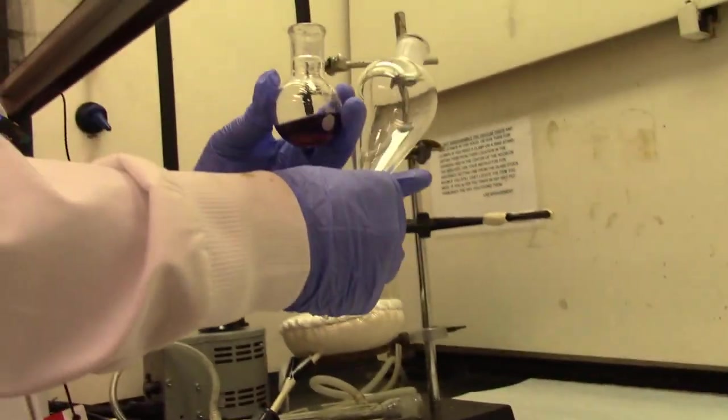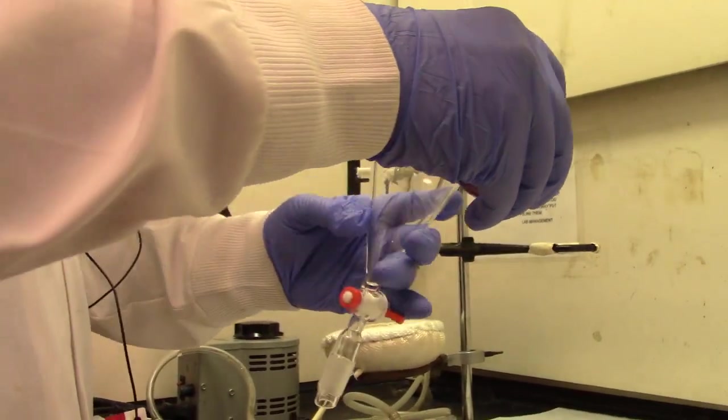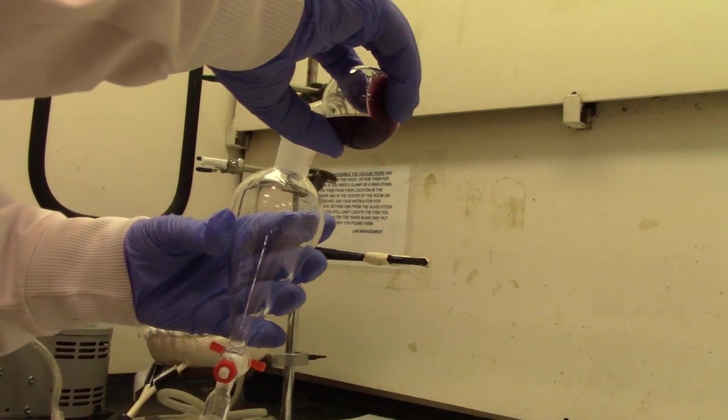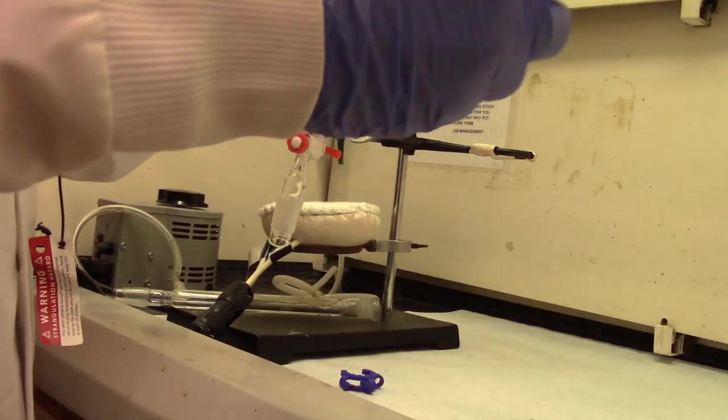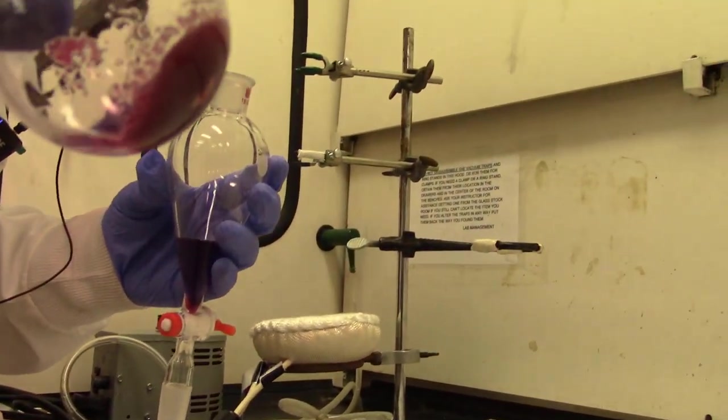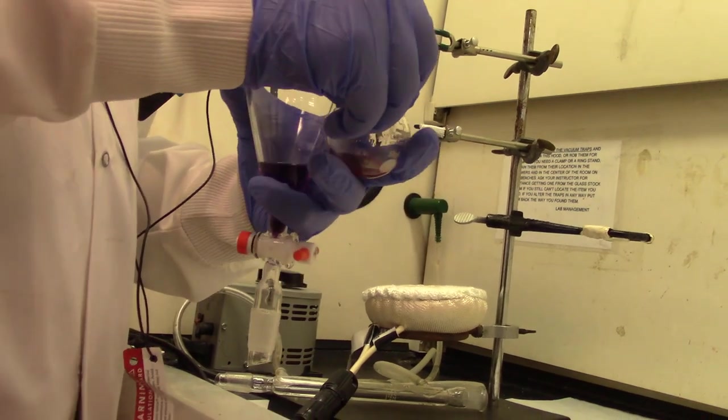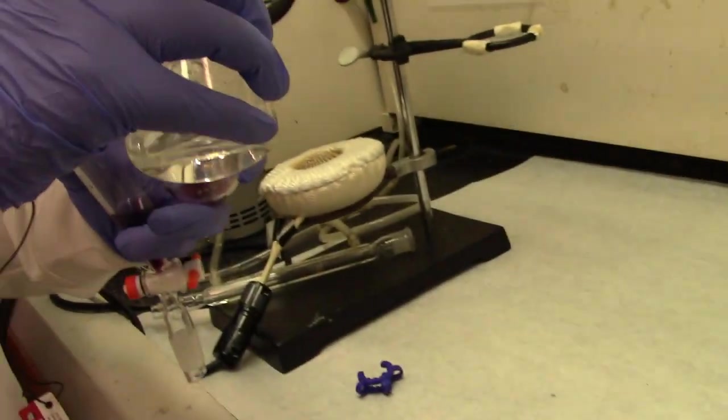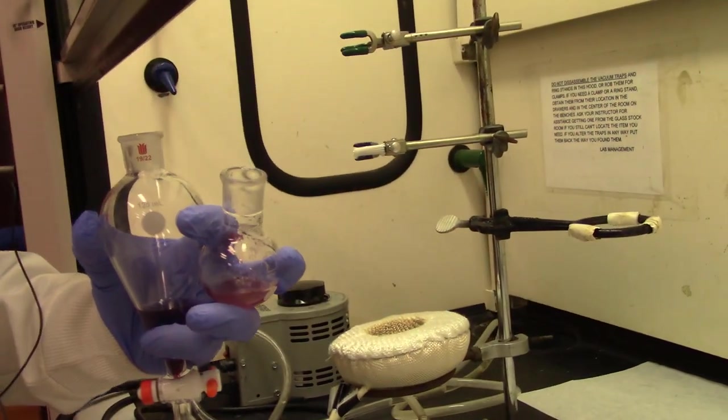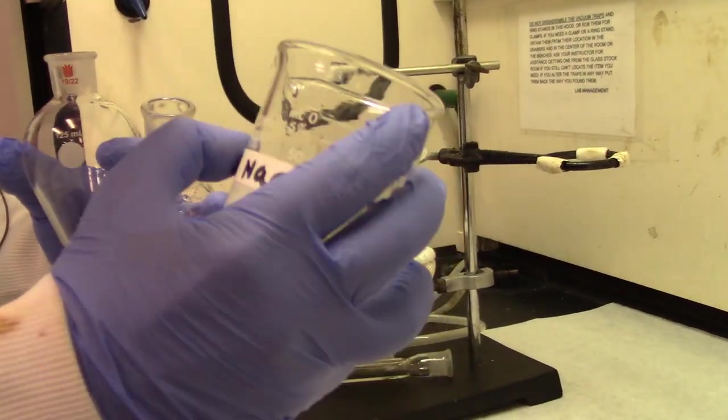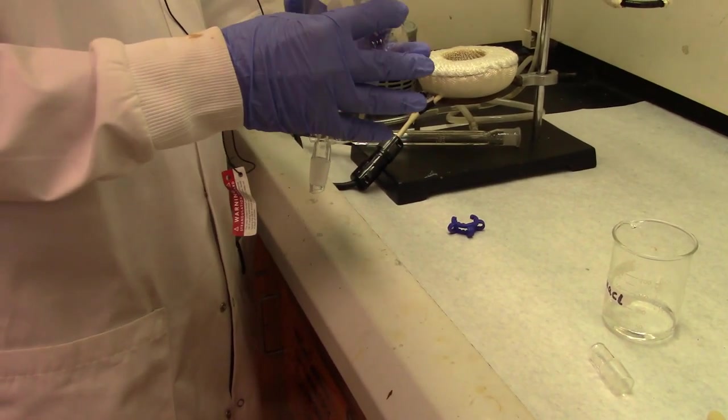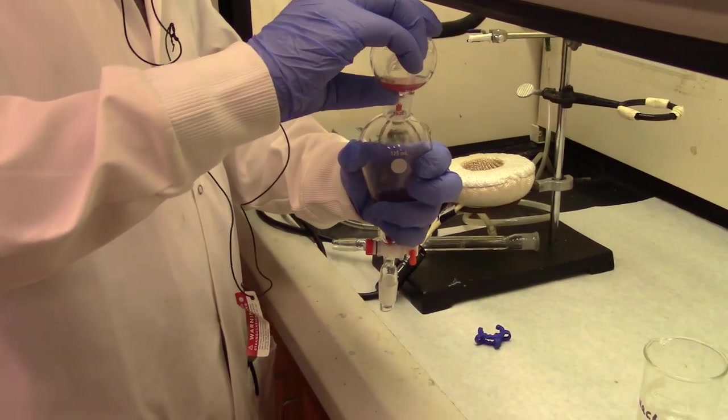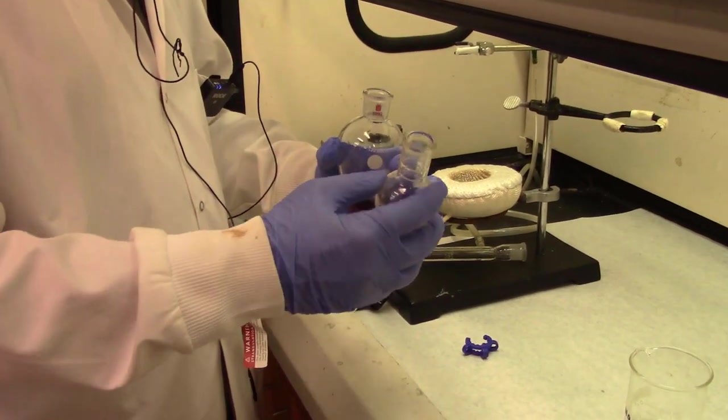You transfer the liquid reaction mixture into the separatory funnel. We are doing the workup. Workup means any process by which you are isolating the desired product once the reaction is complete. Once you have transferred the liquid, you might get a little bit of solid in there. You just add saturated sodium chloride solution to dissolve it. And it's also a rinse with brine or saturated sodium chloride. You swirl it and transfer the rinse into the separatory funnel.